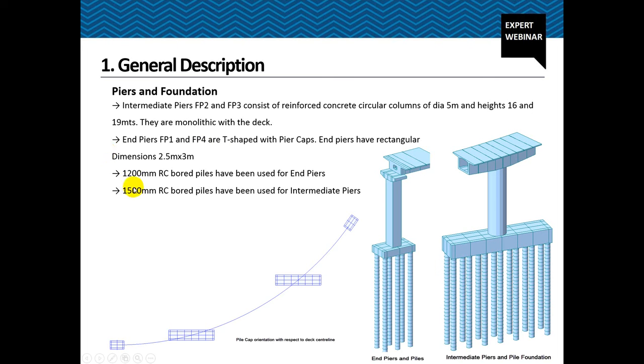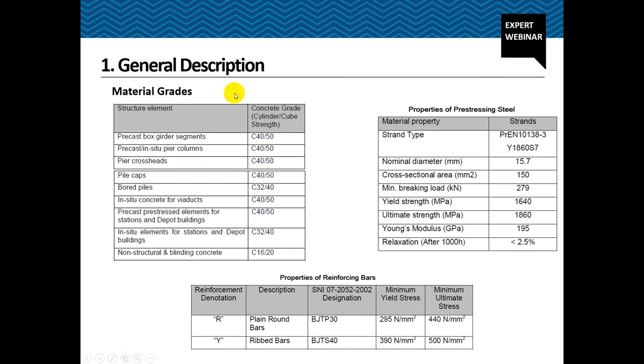Material grades used in the structure include C40 that is cylindrical strength 40 MPa of concrete. For most of the superstructures including the pier cross heads, the pile caps, precast segments. Here we are using in-situ segments. So for the in-situ segments also C40 has been used. For pre-stressing steel, typical 7 strand 15.7 nominal diameter tendons are used. We are using two types of tendons, 17 K15 and 19 K15 in this example. Then ultimate strength is 1860 MPa. Young's modulus is 195 GPa. And reinforcing bars as per the Jakarta Metro specifications in Indonesia is 390 MPa for the main rebars.